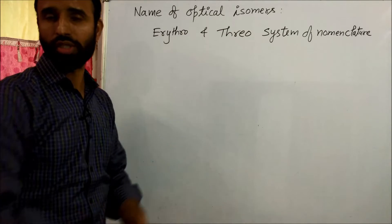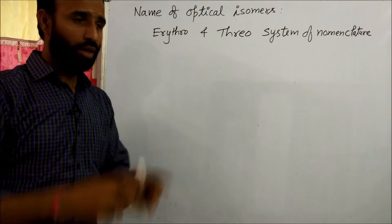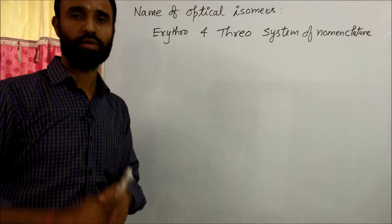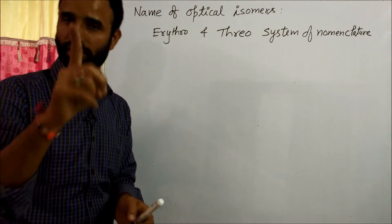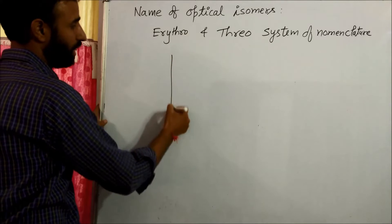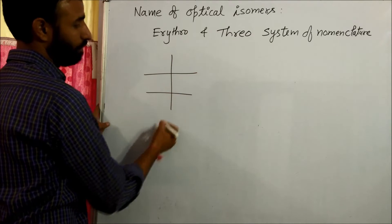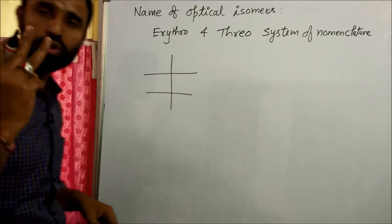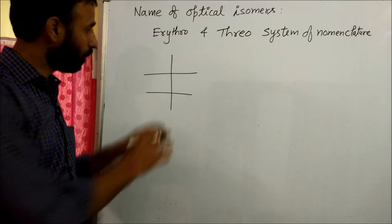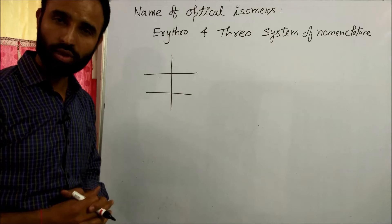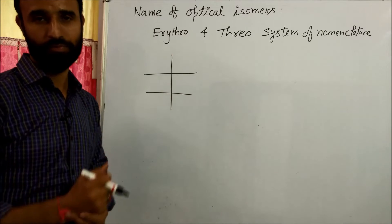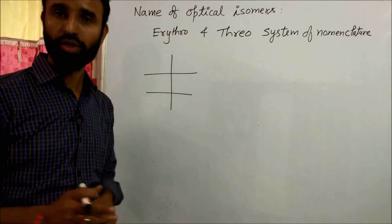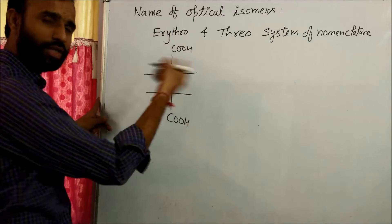In the erythro and threo system of nomenclature, the molecule must have two chiral carbons — that is the first condition. The second condition is that at least two substituents out of the six groups on the two chiral carbons must be the same.